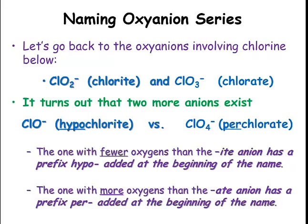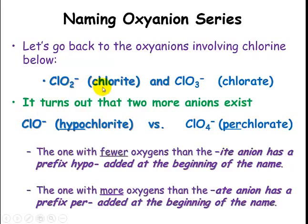The same pattern exists for chlorate versus perchlorate. Chlorine can bond up to four oxygens, so we add an additional oxygen beyond the '-ate' version. Chlorate is three oxygens, and perchlorate is four. The one with more oxygens than the '-ate' anion gets the prefix 'per' added at the beginning. So we still start with the base pair — '-ite' versus '-ate' — and then name hypochlorite relative to chlorite, and perchlorate relative to chlorate.